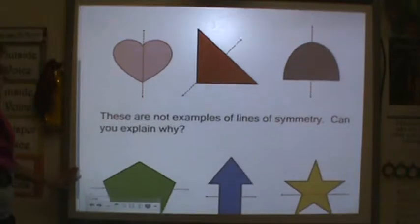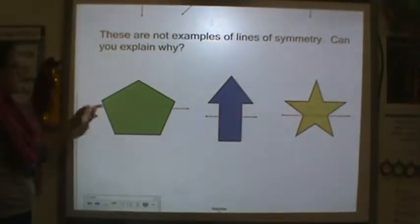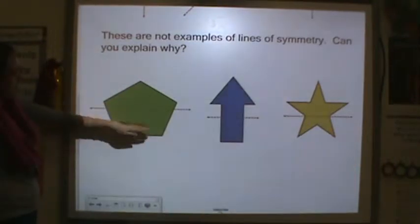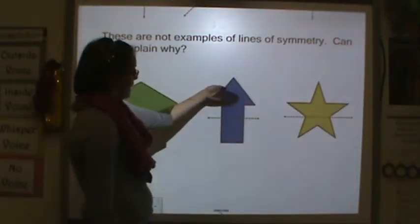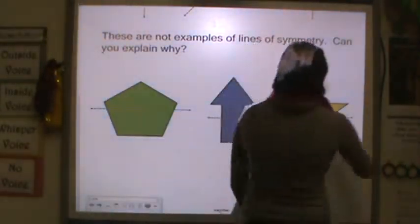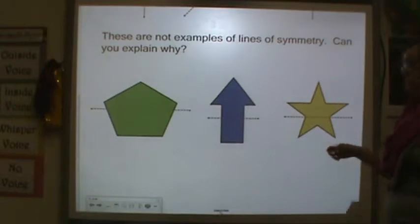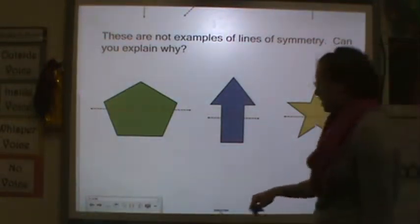Now, down here are not examples of line of symmetry. Here, we don't have a line of symmetry because if we folded the top down, we'd have this weird point and it wouldn't work. Here, if we folded the arrow down, we'd have a point here. And then here, my star, I have one, two, three points on top, two points on the bottom. If you folded that, it wouldn't work.